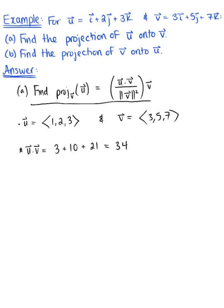Now we need the magnitude of vector v squared. By the properties of vectors, the magnitude of vector v squared is equivalent to vector v dotted with itself. So that's 3² + 5² + 7² = 9 + 25 + 49 = 83.